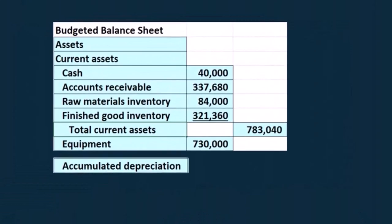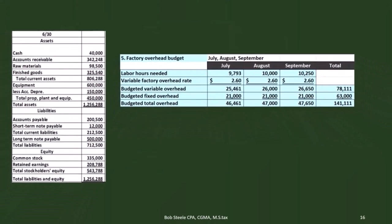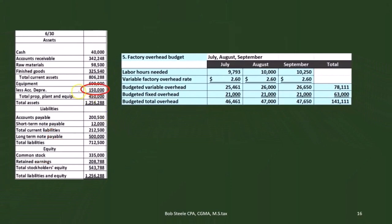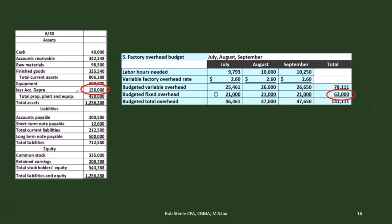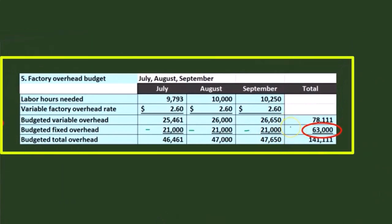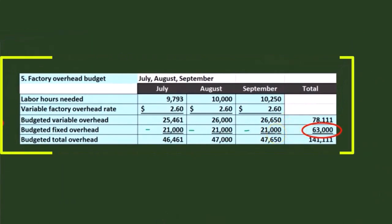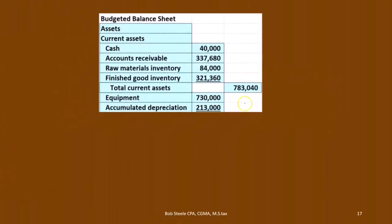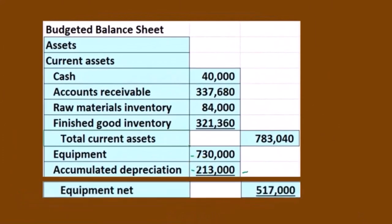Then we have the accumulated depreciation — the amount we're going to reduce the equipment by. We're going to take the balance sheet from the last period. Last period's balance sheet had accumulated depreciation of $150,000. From the overhead budget, we had $21,000 a month, or $63,000 for the quarter. The $150,000 plus the $63,000 in accumulated depreciation gives us $213,000. Then taking $730,000 minus $213,000, we have a book value of the equipment of $517,000.